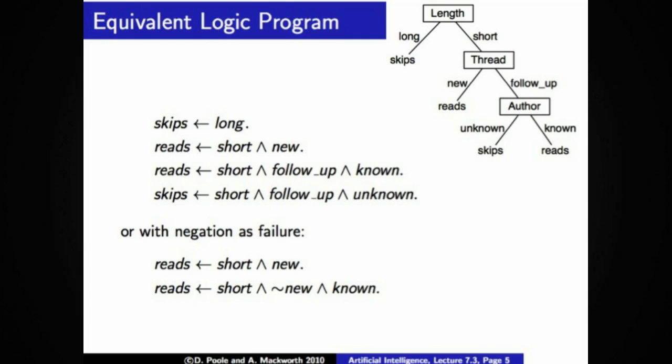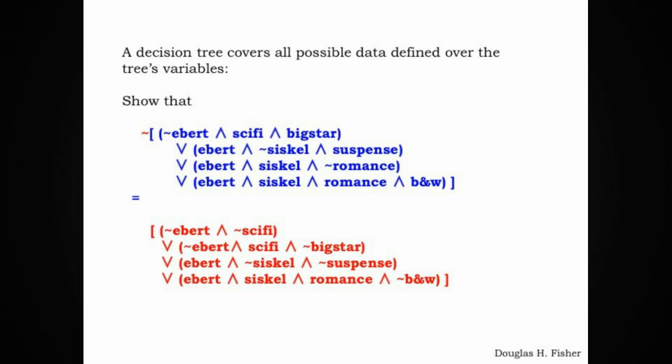And this follows from a very important property of decision trees. And that property is the decision tree covers all the possible data defined over the tree's variables. So here I've rewritten propositional disjunctive normal form representations for rented at the top and not rented at the bottom in red. And for the coverage to be complete, negating the positive rented condition should leave us with the same concept as not rented.